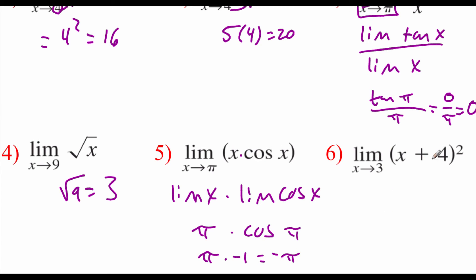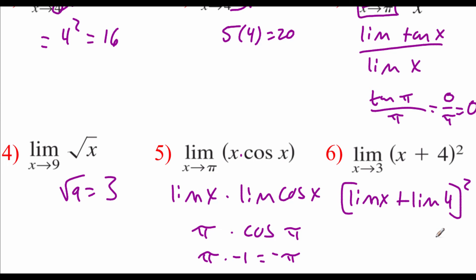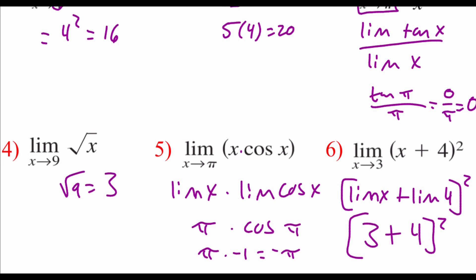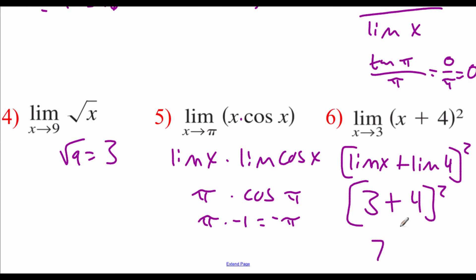For our last one, the limit of (x + 4) squared as x approaches 3. I see we have things being added together, so I want to do the limit of x plus the limit of 4, and then square the entire result. Evaluating as x approaches 3: we plug in 3 for x, giving us 3 plus 4 — there's nowhere to plug x in for the constant, so it stays as 4. Inside our brackets we've got 7, and if we square that, we get 49 as the answer.